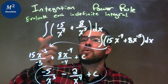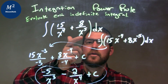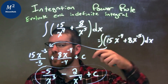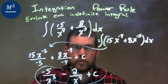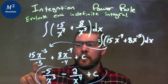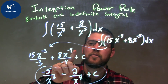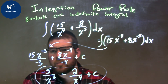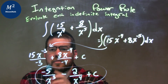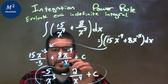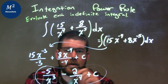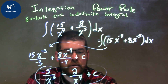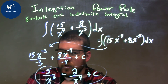Let's recap. We were given the integral of 15 over x to the 4th plus 8 over x to the 5th dx. I rewrote that to have my exponents be negative and in the numerator. From there I used the power rule — added 1 to each exponent: negative 4 plus 1 is negative 3, divided by negative 3; negative 5 plus 1 is negative 4, divided by negative 4. Don't forget the plus C. Then simplified: 15 divided by negative 3 is negative 5, brought the exponent to the denominator; 8 divided by negative 4 is negative 2, brought x to the 4th to the denominator. Final answer: negative 5 over x to the 3rd, minus 2 over x to the 4th, plus C.